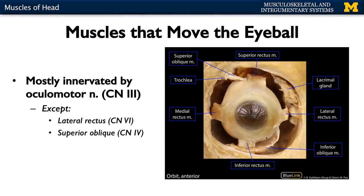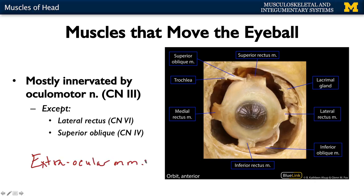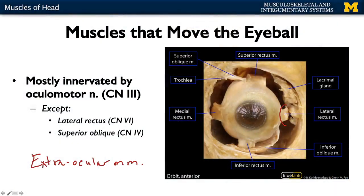Those muscles of facial expression are very close to the surface, attached to the skin. Moving a little deeper, we're going to talk about what we refer to as extraocular eye muscles. Most of these muscles are going to be innervated by your oculomotor nerve, cranial nerve 3. There are two exceptions: your lateral rectus, innervated by the abducens nerve or cranial nerve 6, and your superior oblique, innervated by the trochlear nerve or cranial nerve 4.